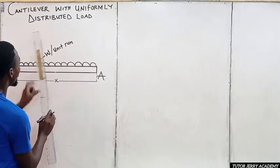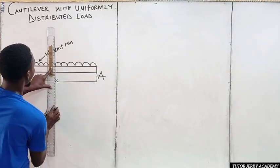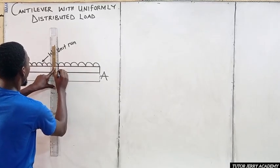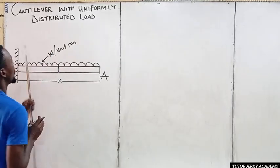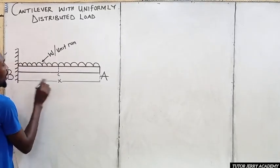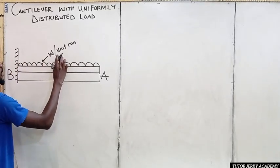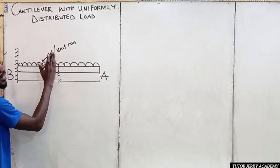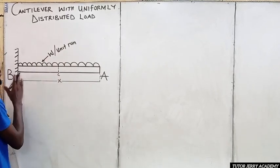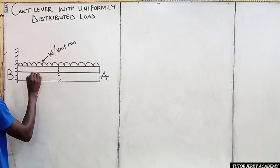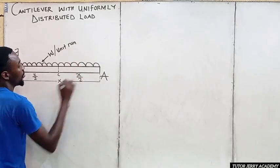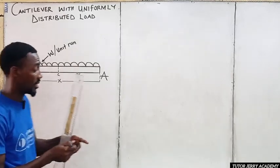Let's pick these points to be the center. So at the center, we are going to have WS. And since the point load is acting at the center, the distance from the center to the end is going to be X over 2, and here it is going to be S over 2.